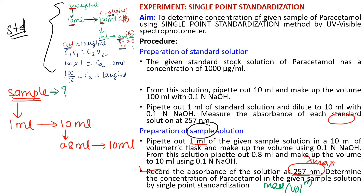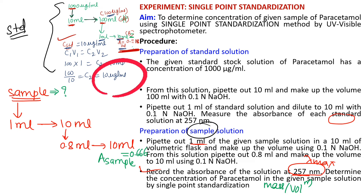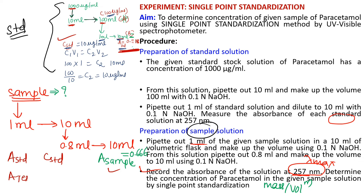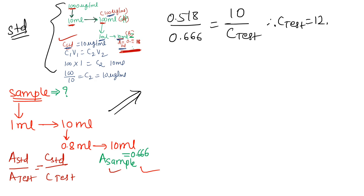Taking the sample absorbance as 0.666, we now substitute into the relationship: A-standard / A-sample = C-standard / C-sample, i.e., 0.518 / 0.666 = 10 / C-sample. Solving gives C-sample = 12.8571 microgram/ml. The unit is the same as that of the standard concentration, which is microgram/ml. However, the calculation is not over yet — this is the concentration of only the final solution.